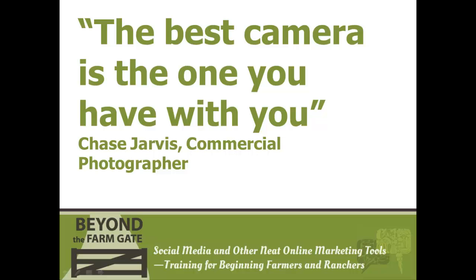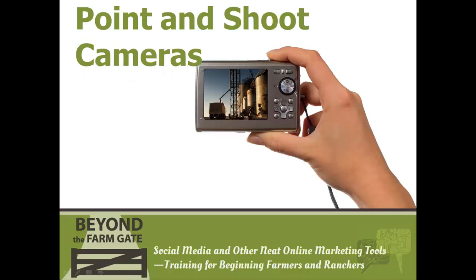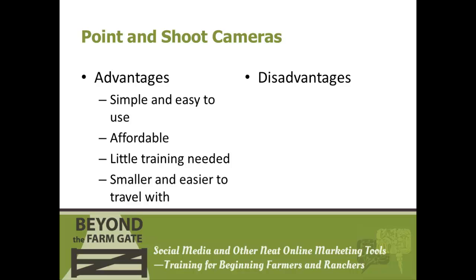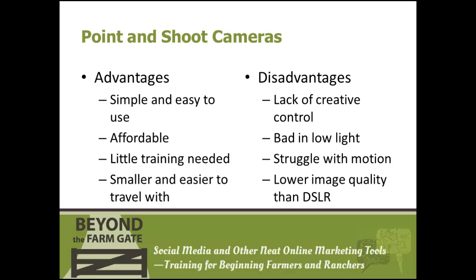There are two basic types of cameras to choose between: point and shoot cameras and DSLR. Point and shoot digital cameras work exactly as the name implies — you point it at what you want to photograph and the camera handles the exposure and focus. They are simple, easy to use, affordable, and often offer good image quality for their price point. They require very little knowledge of photography and are small enough to put in your pocket or bag. However, their basic functions can limit creative control, and they will have a more difficult time in lower light, struggle capturing movement, and have lower overall image quality compared to DSLRs.